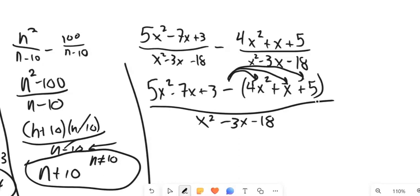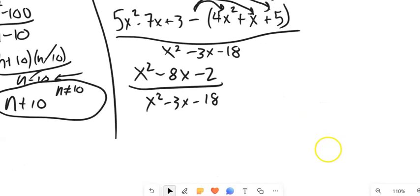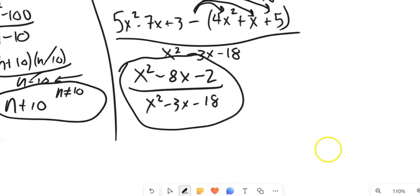So 5x squared minus 4x. Let's see. 5x squared minus 4x squared is x squared. Negative 7 minus 1 is negative 8. 3 minus 5 is negative 2. And that's over x squared minus 3x minus 18. And I'm not going to be able to factor that top. So this is my answer.